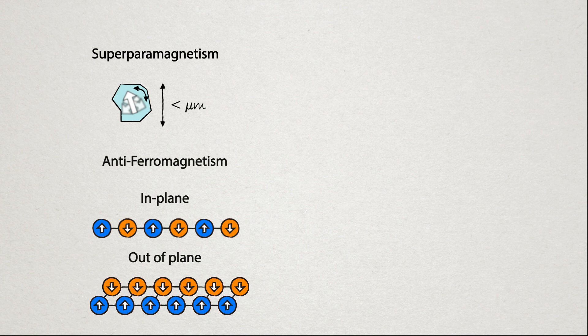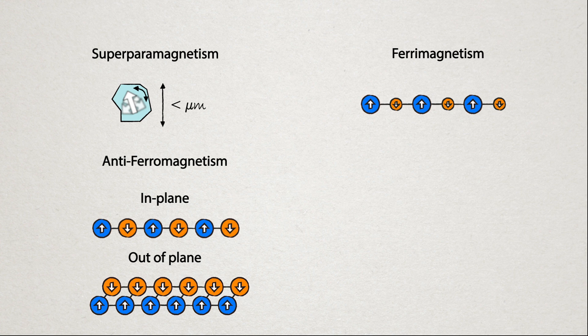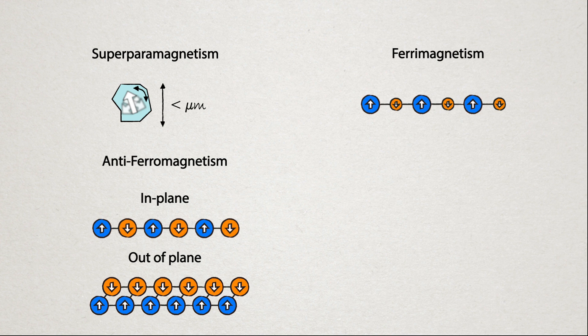Similar to anti-ferromagnetism is ferrimagnetism. It's essentially the same principle, but the opposing atoms have a different field strength, so that the magnetic field is not completely cancelled, rather it is just weakened.